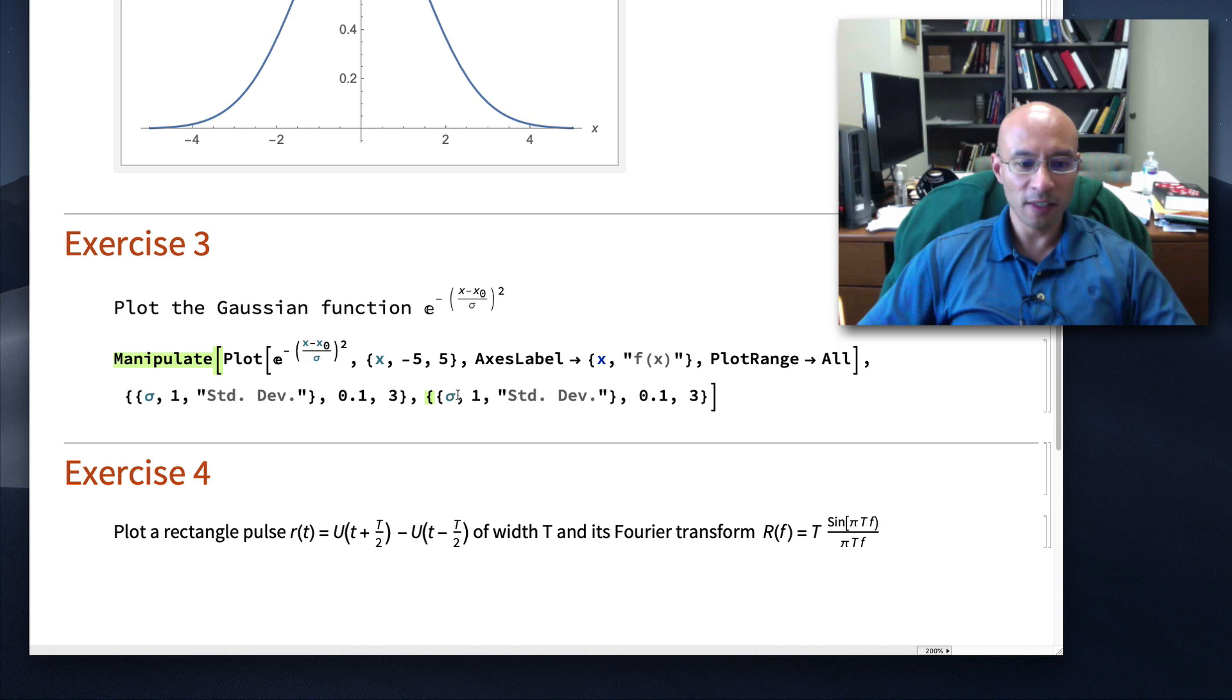So I copied and pasted. This is all in the manipulate command, so I put here x, control underscore, 0. Let's let it start at 0. And here it plays the role of the mean for the Gaussian. And this range should go from 0 to, let's say, 3, should be a positive number. And if I hit plot, now I have two sliders.